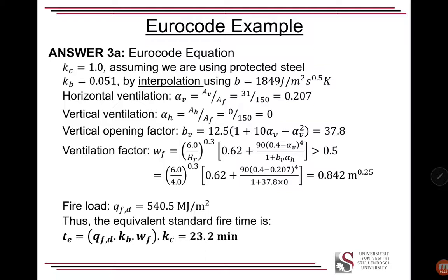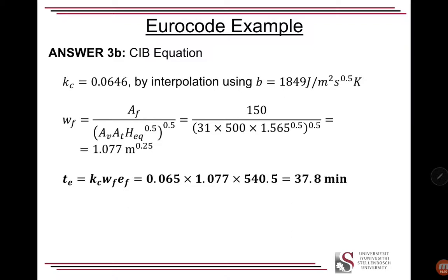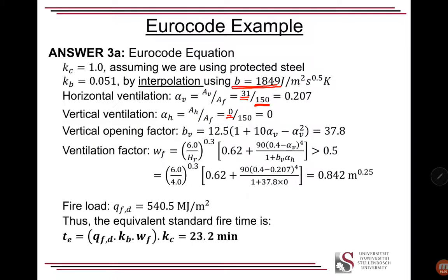So now, coming to the equation, this is the answer to the question above, to determine the equivalent fuel load. So kc is 1, so we're assuming using protected steel. If we were using something different, we'd possibly have to adjust this if it was unprotected steel. And then our kb, so this is Eurocode from the value above, I've interpolated it using a thermal inertia of that, and that was calculated in the previous video. Horizontal factors we've got 31 square meters over 150 square meters of floor area. I'm sorry, just going back. And then we've got no roof vents, a vertical opening factor, and calculating vent areas because it's a four meter high boundary. And we have a ventilation factor. Fire load as previously calculated, plugging it in, and we get to a time of 23 minutes.